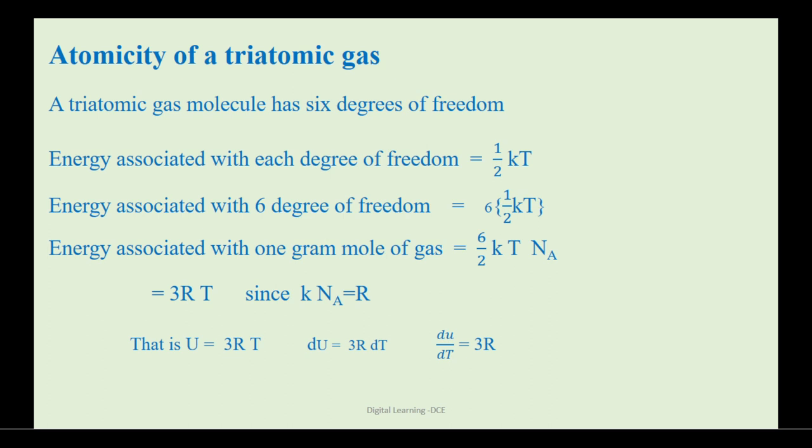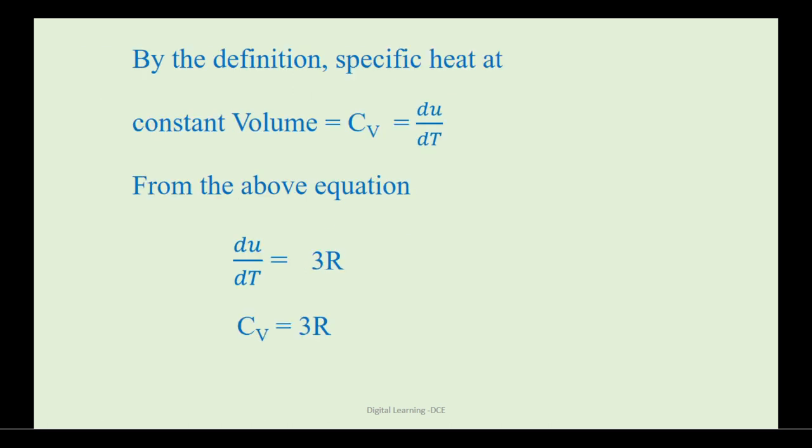Here, the term du by dT represents Cv value of triatomic gas, that is specific heat capacity at constant volume. By the definition, du by dT represents Cv value. Hence, Cv is equal to 3R.